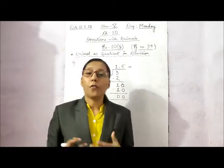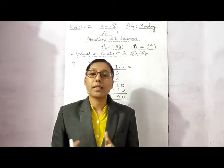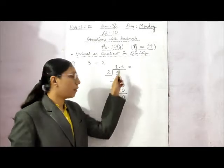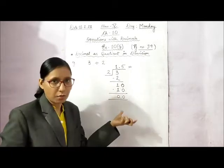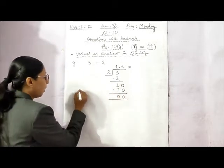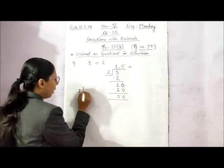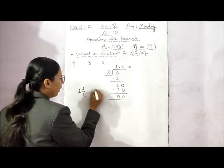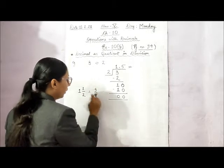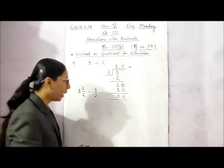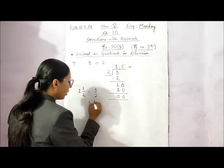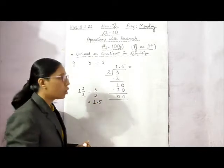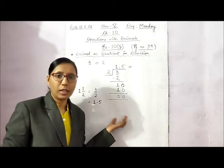So 1.5 will be the answer of 3 divided by 2. This means a fraction can be written as a division sum. If we hadn't solved it, we could write it as a mixed fraction — 1 and 1 upon 2, which is the same as 3 upon 2. This decimal fraction becomes 1.5 as a decimal number. So we are going to learn about this only — dividing whole numbers by whole numbers to get decimal numbers.